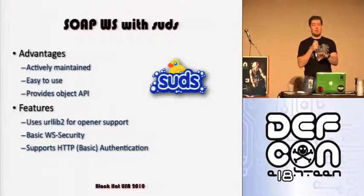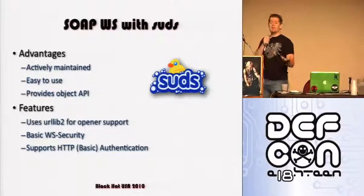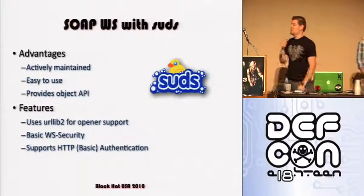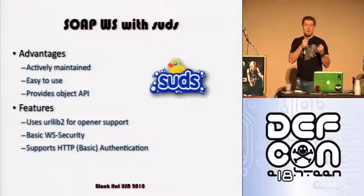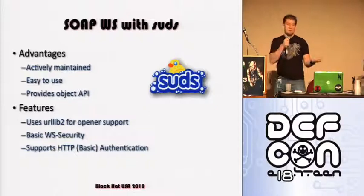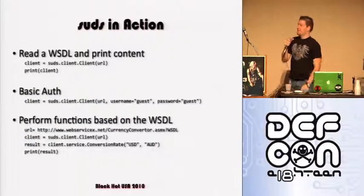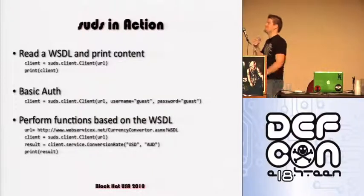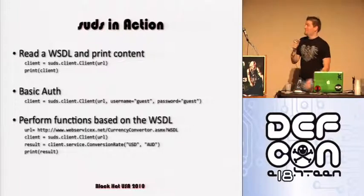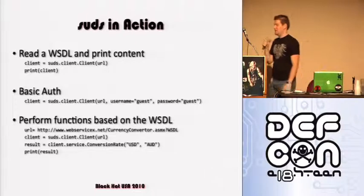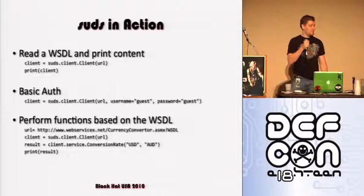SUDS uses URLlib2 for opener support. URLlib2 is an extensible library, which means you can create new protocols and handlers and install those. As long as it's using URLlib2, that means if you're handling basic auth, cookies — all of that — it has familiar support. To read a WSDL in a couple lines of code — actually this is two, so it really is a couple — you just point it to a URL and print the client, and that prints off the WSDL's methods. We already have like two findings on this one page: published WSDL and basic auth in use.